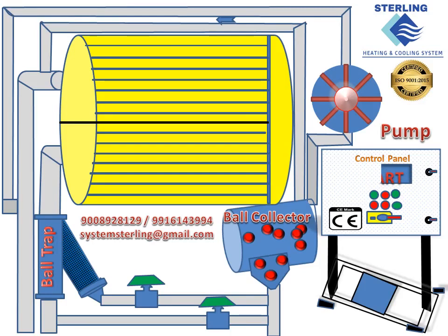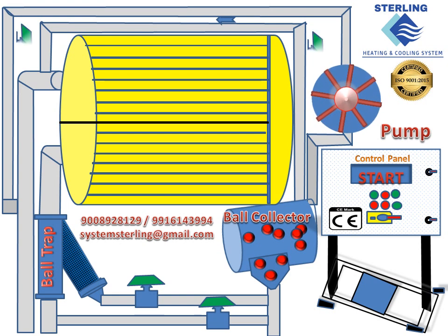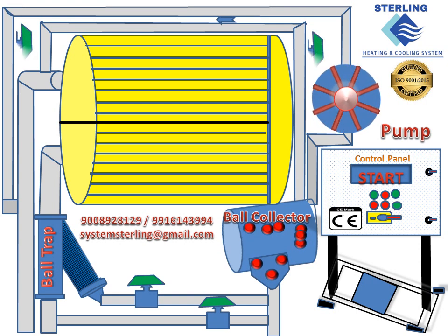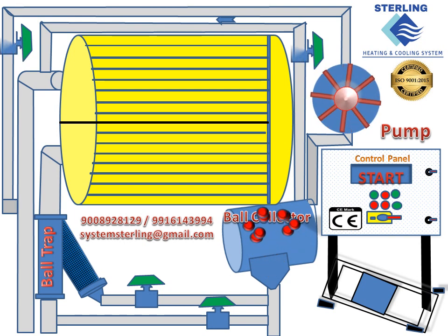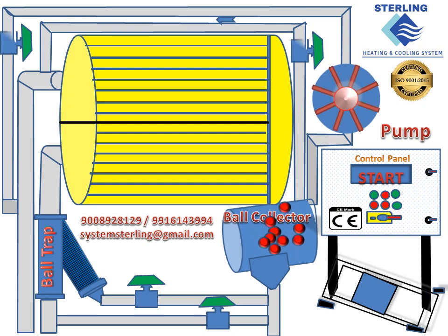The auto-tube cleaning system starts with the water pump of the condenser tube cleaning system, pumping the balls from the ball injector to the water inlet of the condenser. The balls enter the end cover of the condenser along with the circulating cooling water and get into the copper tubes of the condenser randomly, driven by the circulating cooling water.